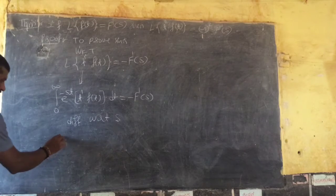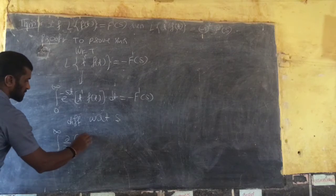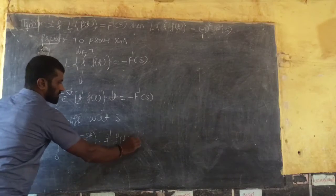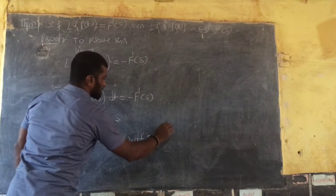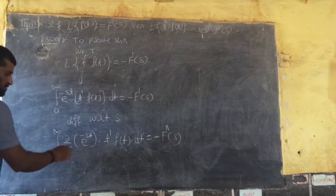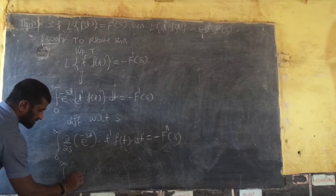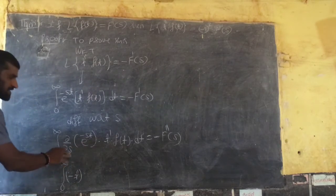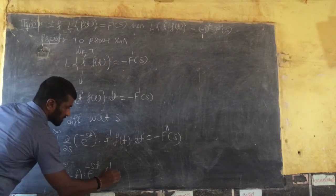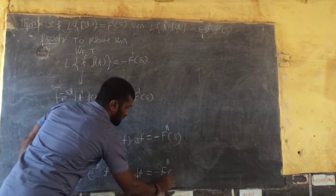Differentiating partially with respect to s: from 0 to infinity, ∂/∂s of e to the power minus st, into f(t), dt equals minus F double dash of s. Differentiating the left side with respect to s gives 0 to infinity of minus t, into e to the power minus st, into f(t) dt, equals minus F double dash of s.